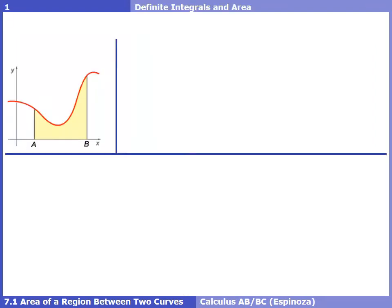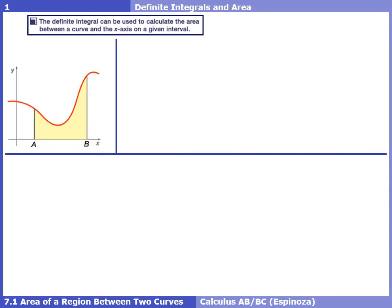Let's revisit the idea of finding the area between a curve and the x-axis before we move on to finding the area between two curves. What we saw back in Chapter 4 is that a definite integral can be used to calculate the area between a curve and the x-axis on any given interval. We understood that we were trying to add up the area of an infinite amount of rectangles.